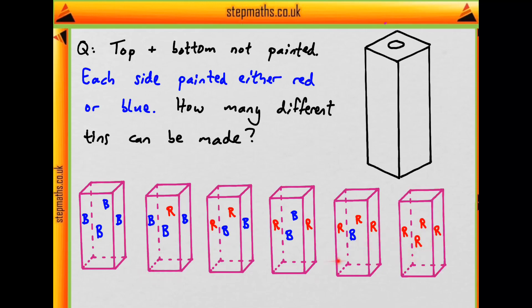We've done it systematically so we know we've not left any out, and these are our six possible types. So the final answer is that six different tins can be made, which corresponds to A on the question paper.